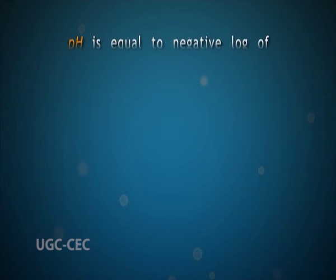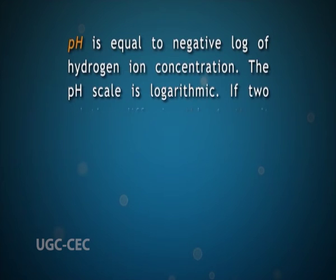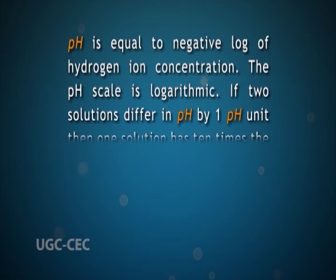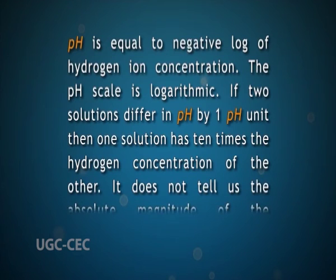The pH scale is used to describe whether a solution is acidic or basic. It designates the hydrogen ion and hydroxide ion concentrations. The ion product of water is the basis for the pH scale. The pH scale is logarithmic — if two solutions differ in pH by one unit, then one solution has ten times the hydrogen ion concentration of the other. It does not tell us the absolute magnitude of the difference.